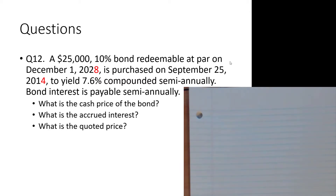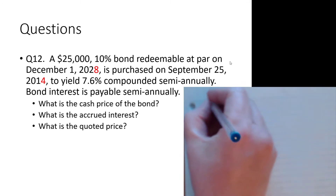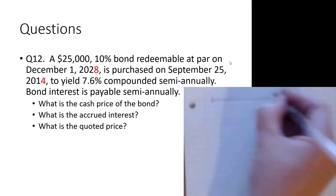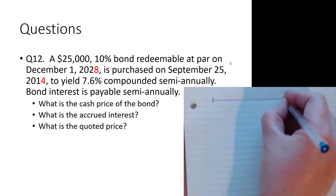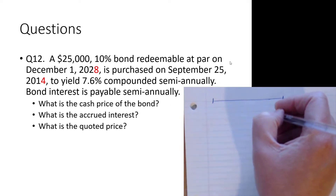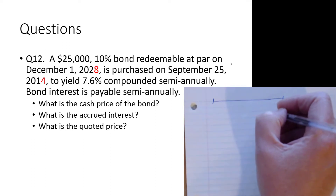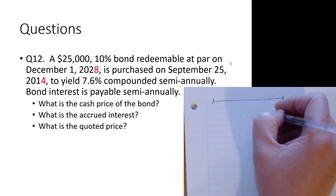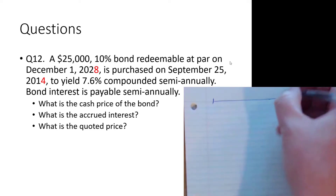The accrued interest is pretty straightforward, and the quoted price is just the difference between the cash price and the accrued interest. Those next two questions are easier, but there is work involved in finding the cash price. A timeline is very important any time we're trying to keep everything neatly organized — the timeline is key.